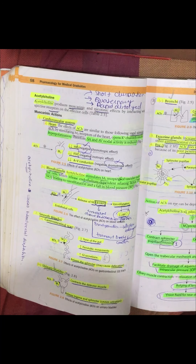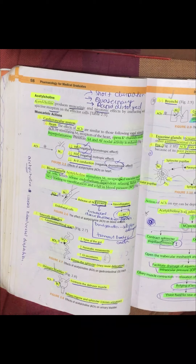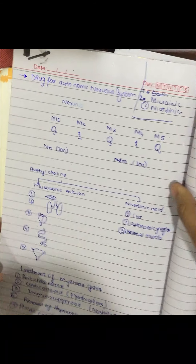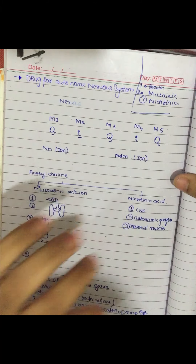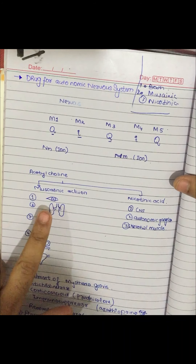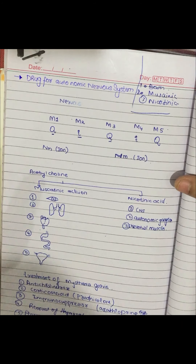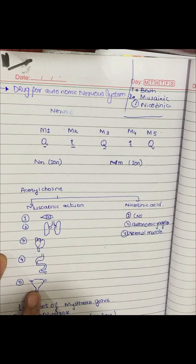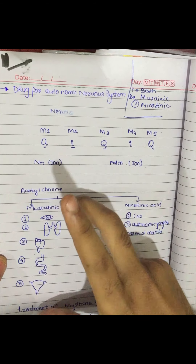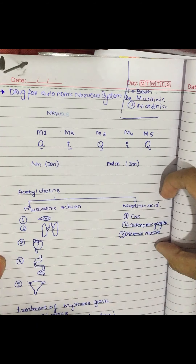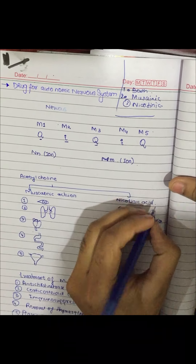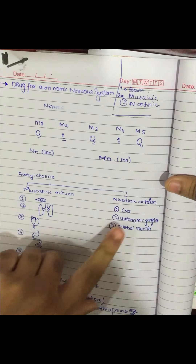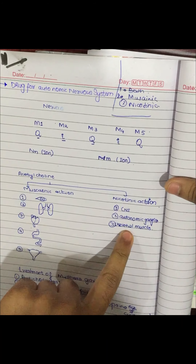Acetylcholine has both muscarinic and nicotinic actions. To remember the muscarinic actions, go from top to bottom: eyes, lungs, heart, GIT, then urinary bladder. For nicotinic actions, there are CNS effects, autonomic ganglia effects, and skeletal muscle effects.